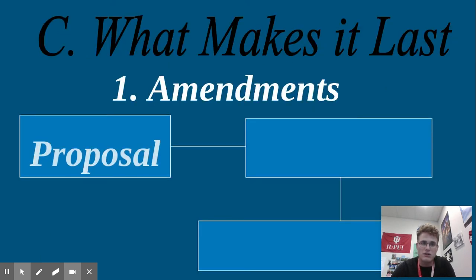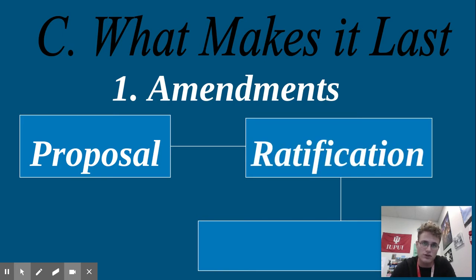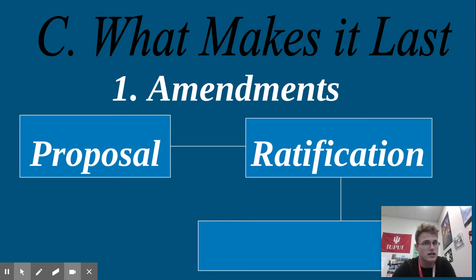What makes an amendment last? The first thing you have to do is propose the amendment in Congress. The most important process is that someone — almost like a bill — has to propose an amendment in the federal Congress. Both houses have to approve it with a two-thirds vote: two-thirds of the 435 people in the House of Representatives and two-thirds of the 100 in the Senate. Then it moves to the states, where each state votes on whether to add that amendment. If three-fourths of the states ratify it, the amendment is officially added to the federal Constitution.